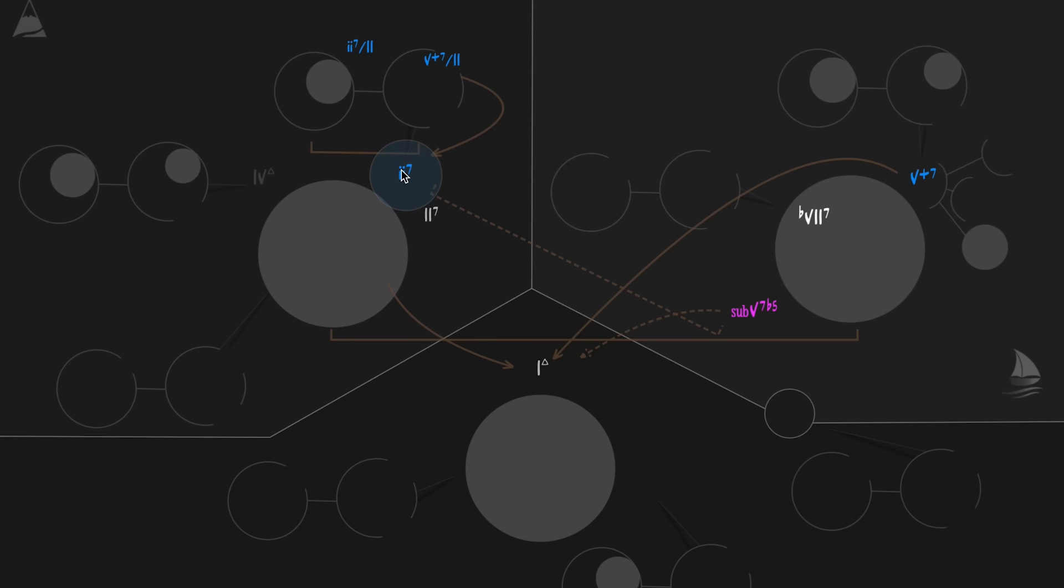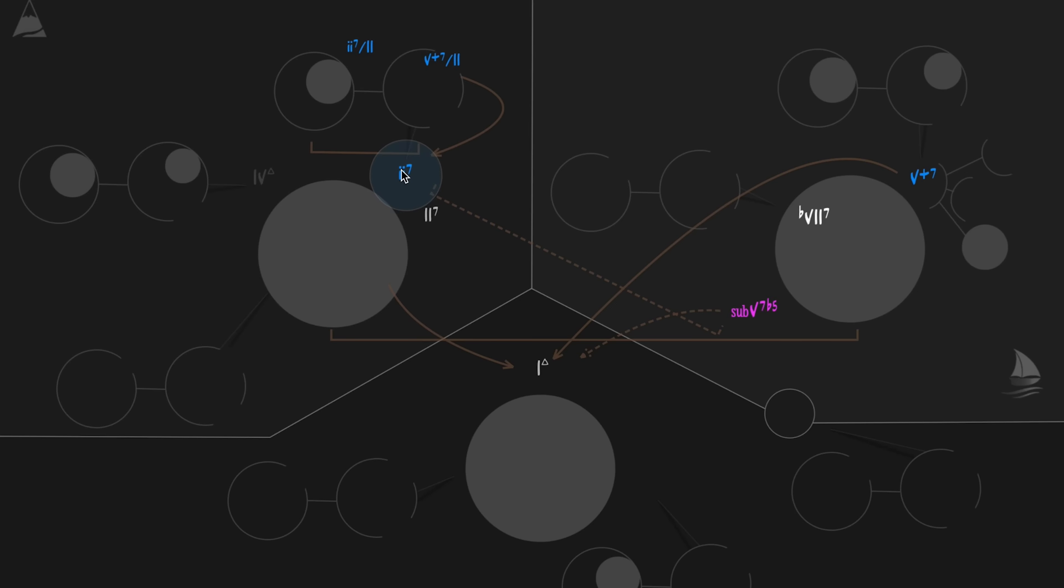Let's take a look at measure 6. If you listen closely, you'll notice that the chord progression is a reharmonization of a typical 2-5-1. But instead of using the 5 chord, Jobim gets creative and replaces it with a sub-5, giving us a 2-sub-5-1 path.